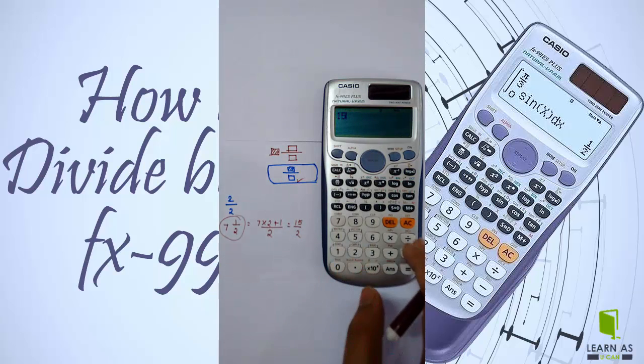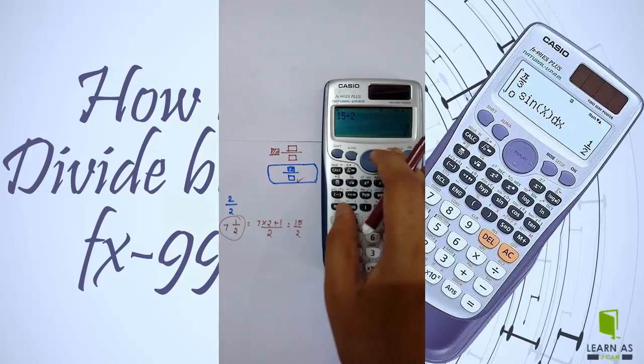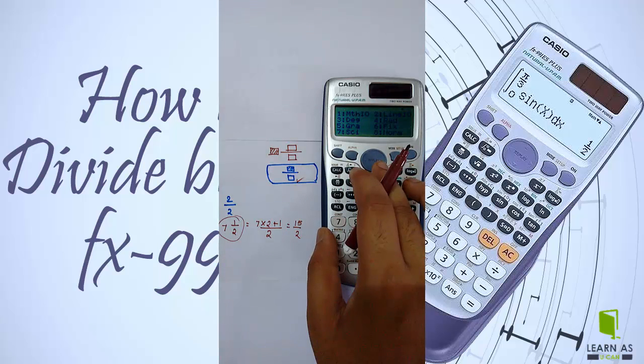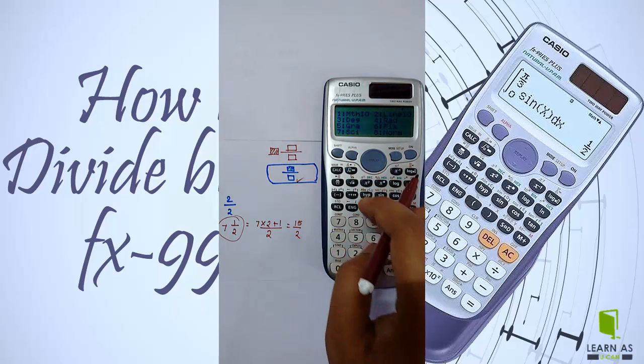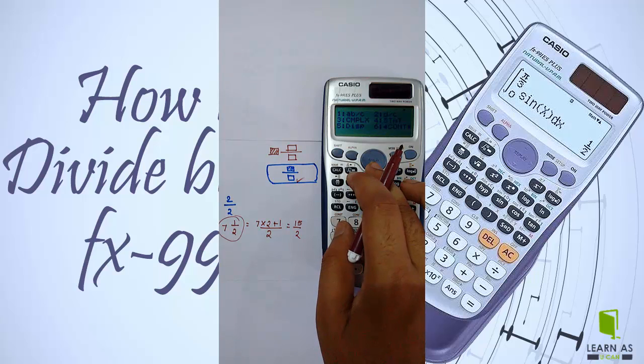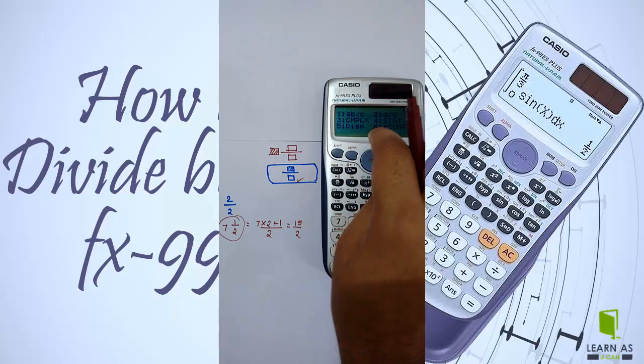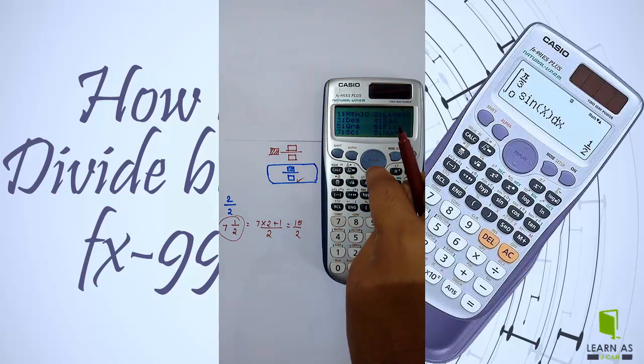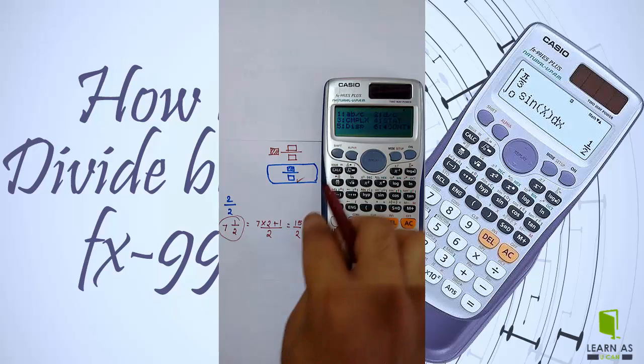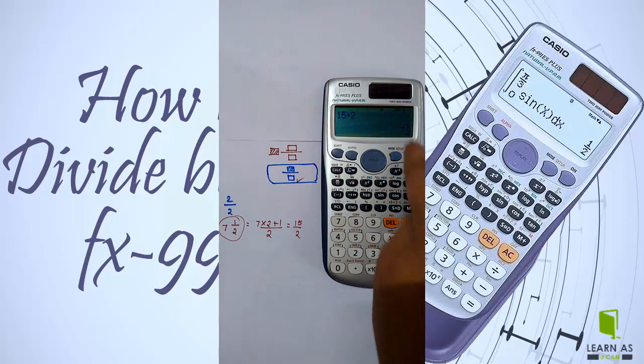This example at 15 by 2 - I'm getting this result. Shift mode, setup, select mode. You can see here AB by C. I have used the menu downward key, then 1.